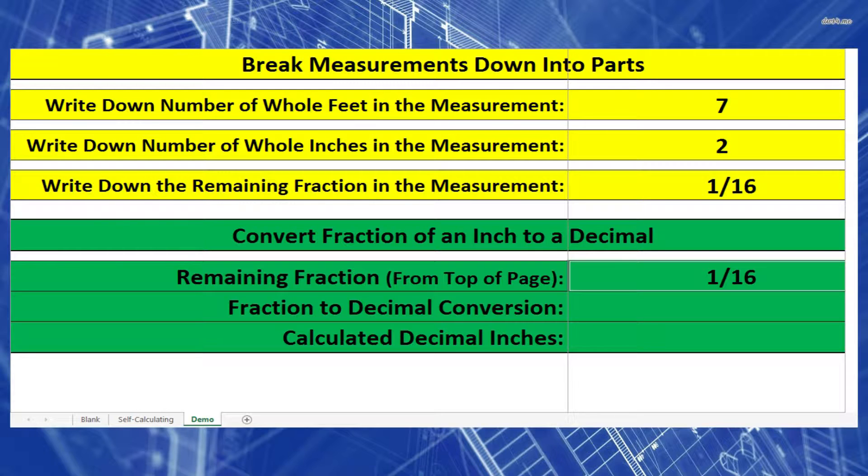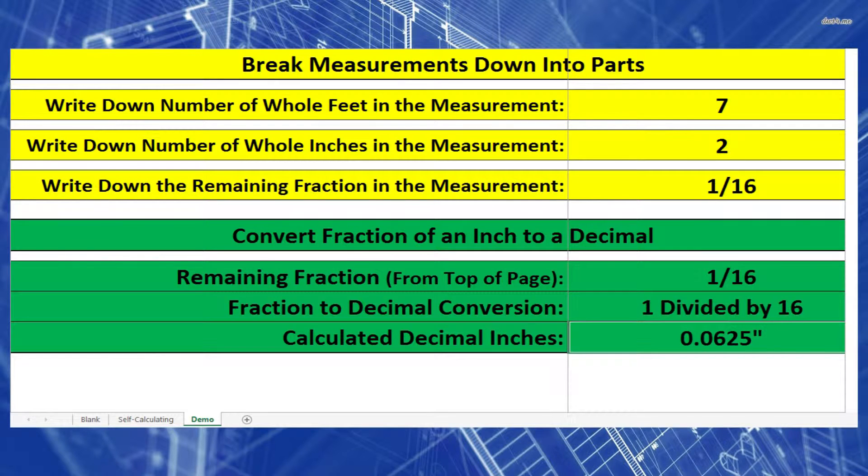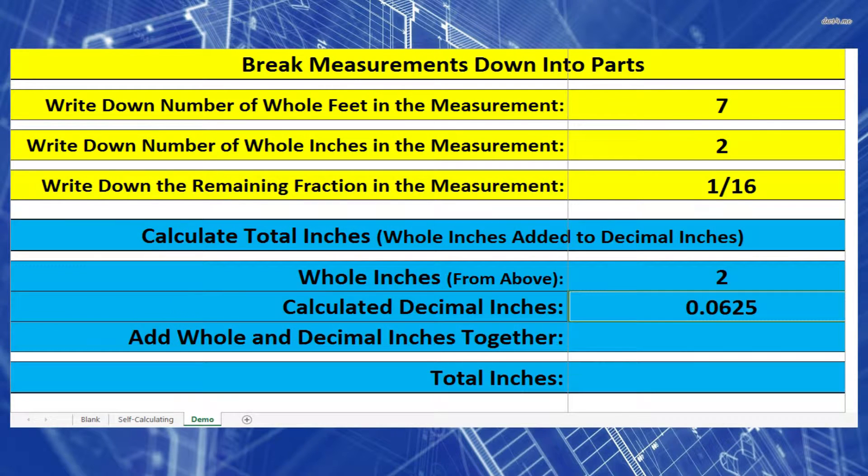To do this I take the top number 1 and divide it by the bottom number 16. And I should get a number like this 0.0625 inches. Now I need to take that number and add it to my whole inches which is 2. And I should get 2.0625 inches.